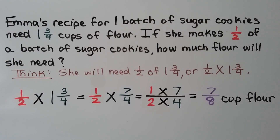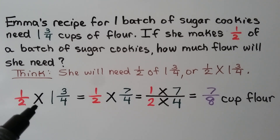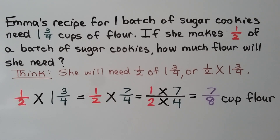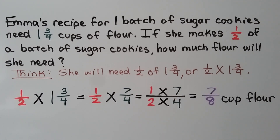Emma's recipe for one batch of sugar cookies needs 1 and 3 fourths cups of flour. If she makes half a batch, how much flour will she need? She will need half of 1 and 3 fourths, or 1 half times 1 and 3 fourths. We rename 1 and 3 fourths as 7 fourths: 1 times 4 is 4 plus 3 is 7 over 4. We multiply: 1 times 7 is 7, and 2 times 4 is 8. She'll need 7 eighths cup of flour.